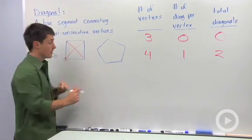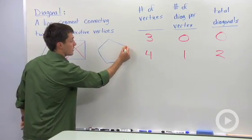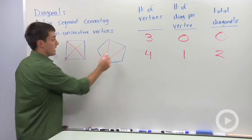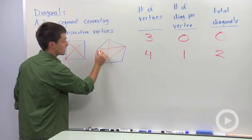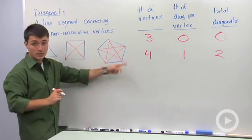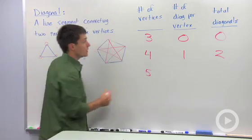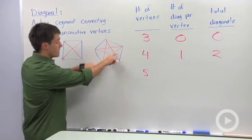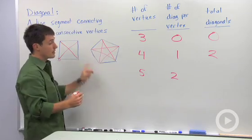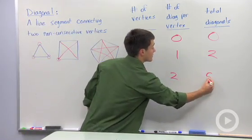Last, let's look at a pentagon. If I look at this vertex, I can draw in one, two diagonals. And I'm going to see that for every vertex, I'm going to be able to draw in two different diagonals. So the number of vertices here is five. The number of diagonals per vertex is two. And the total number of diagonals here, we have a little star, so we have five diagonals.